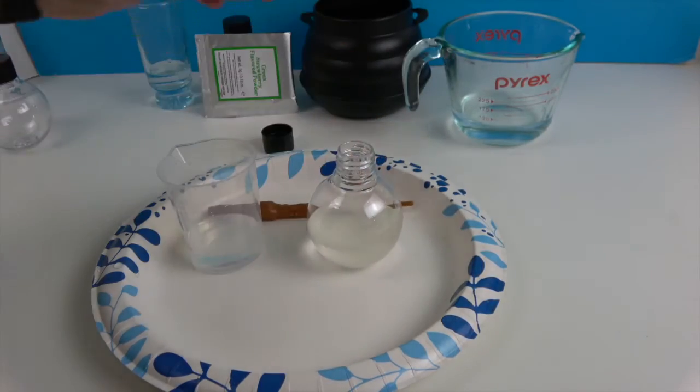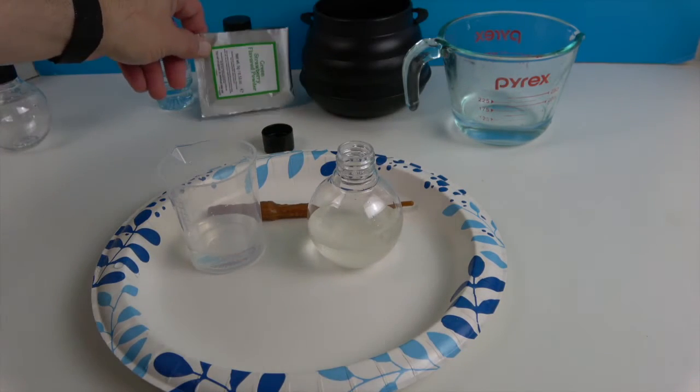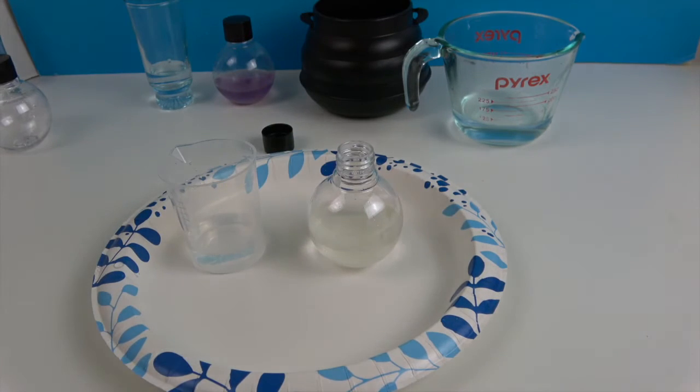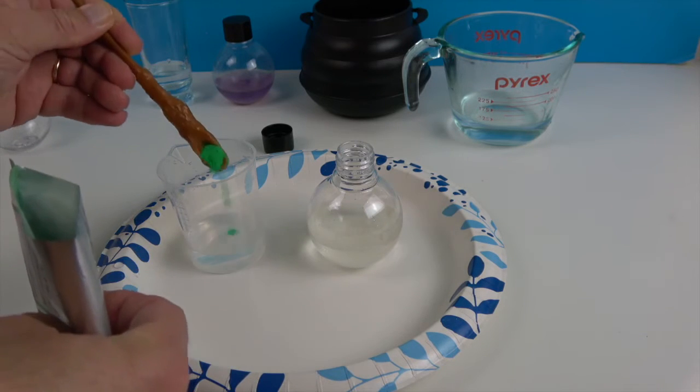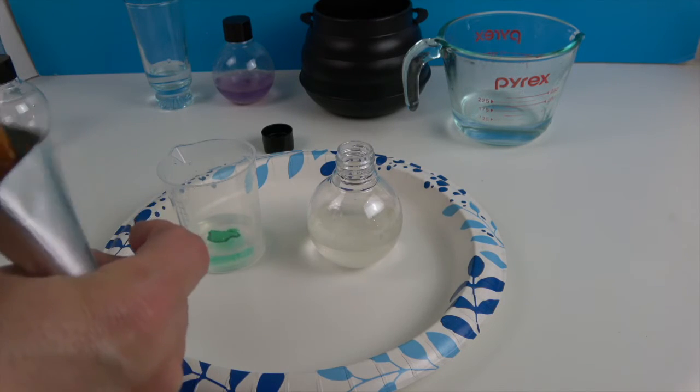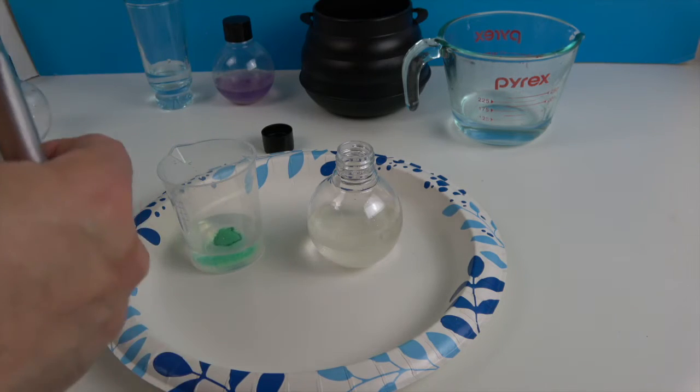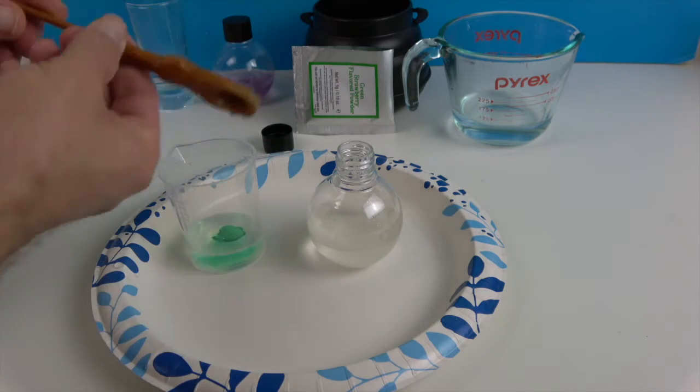After we get it in the flask we will be adding 20 milliliters of warm water and two spoonfuls of green strawberry flavored powder. So now we put 20 milliliters of warm water back into our beaker and we're going to add two spoonfuls of green strawberry flavored powder to that warm water. We're going to stir it up with the spoon side and get all that good greenness in there.